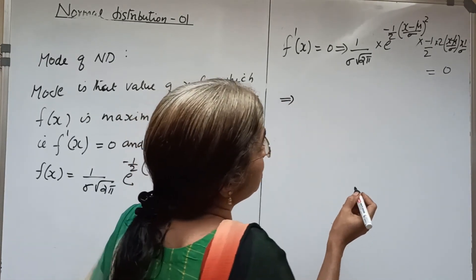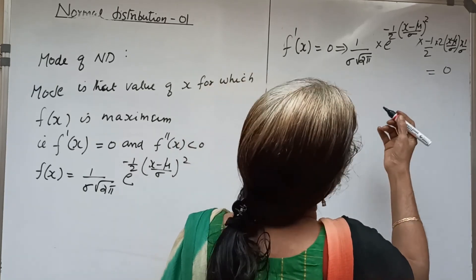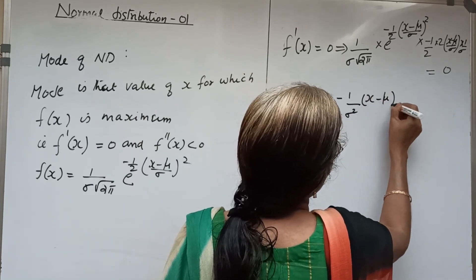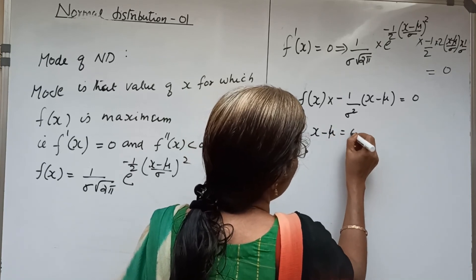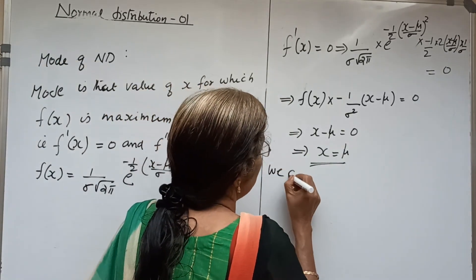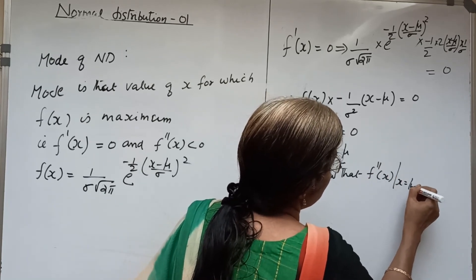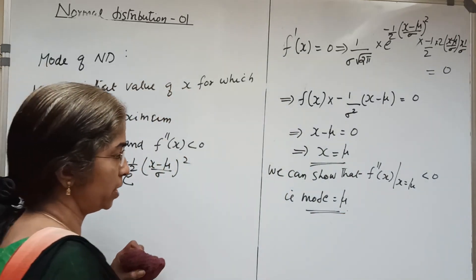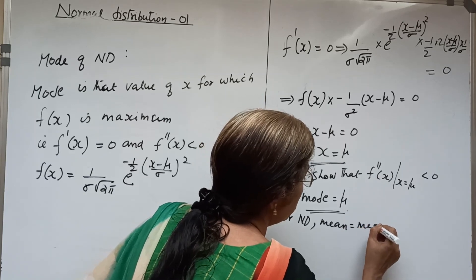Since f of x cannot be zero, we get x minus mu equal to 0, which implies x equal to mu. We can show that f double dash x at x equal to mu is less than 0, confirming it is a maximum. Therefore mode equals mu. Hence we have the very important property that for normal distribution, mean equal to median equal to mode equal to mu.